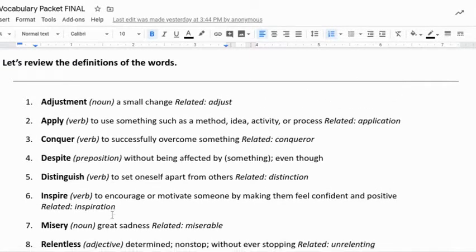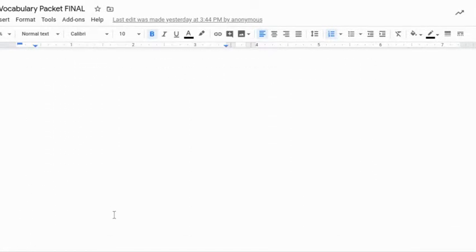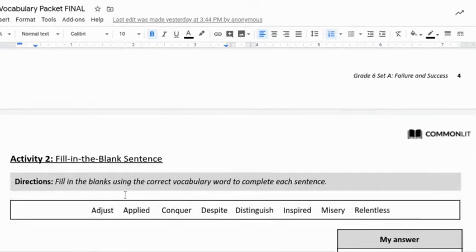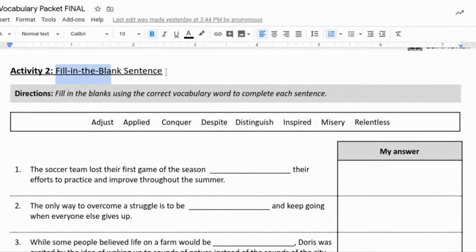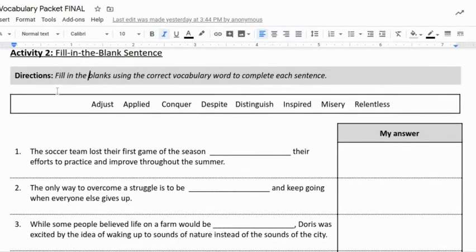Activity two, scrolling down. Here's the definition of the word. Don't go to those until you have actually done the activity, otherwise you're not going to get better at using context clues, and that's the point of this activity. Number two is a fill in the blank sentence, so simply fill in the blanks using correct vocabulary words to complete each sentence. The first one here: 'The soccer team lost their first game of the season blank their efforts to practice and improve throughout the summer.' You'll write your answer in this spot over here, in this spot here if you can see it right there.